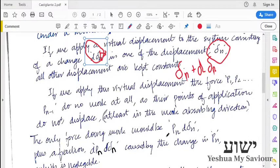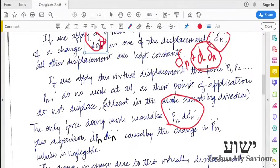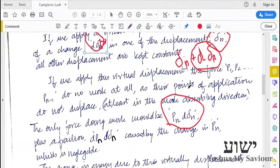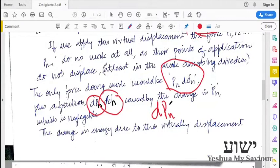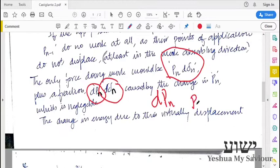So the net work, or increase in work done, is given by Pn times the displacement. We apply a small load d Pn which causes a small displacement d delta n. So the net energy, or the increase in energy, is Pn d delta n.